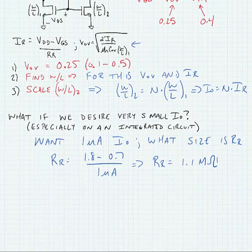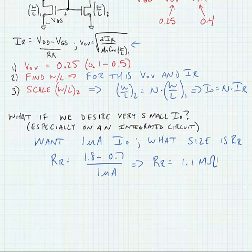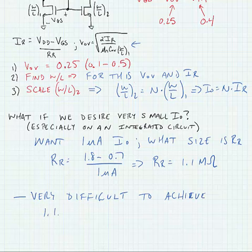We could easily accommodate this if we were building a discrete circuit with bipolar transistors, but this would be very difficult on an integrated circuit. In the next lecture, we're going to look at how we actually scale this if we want to make the current smaller rather than bigger.